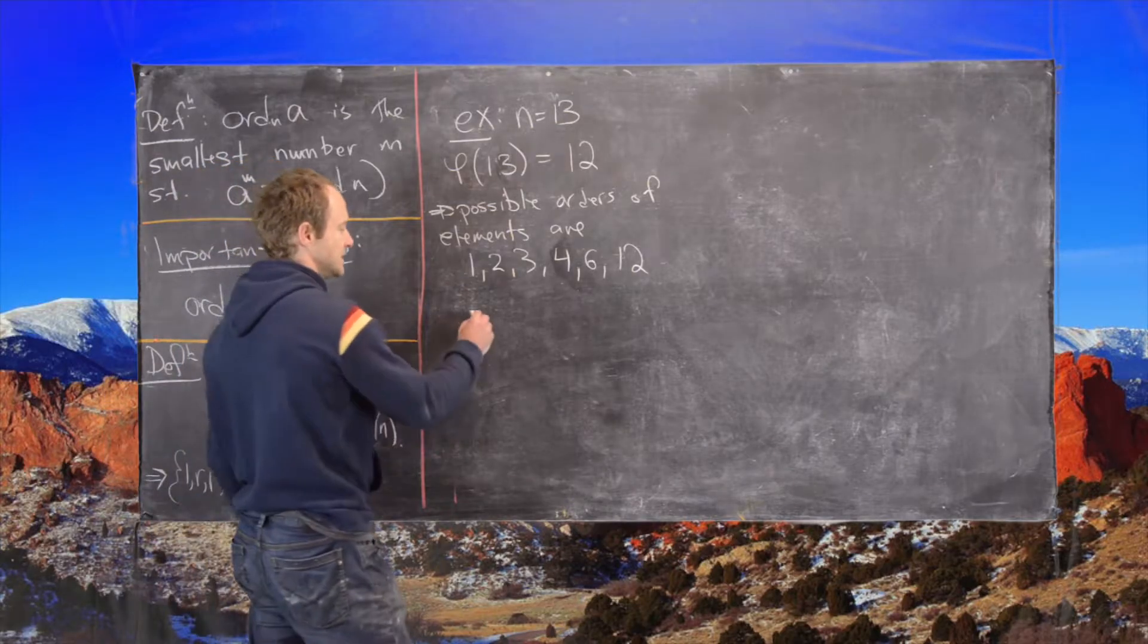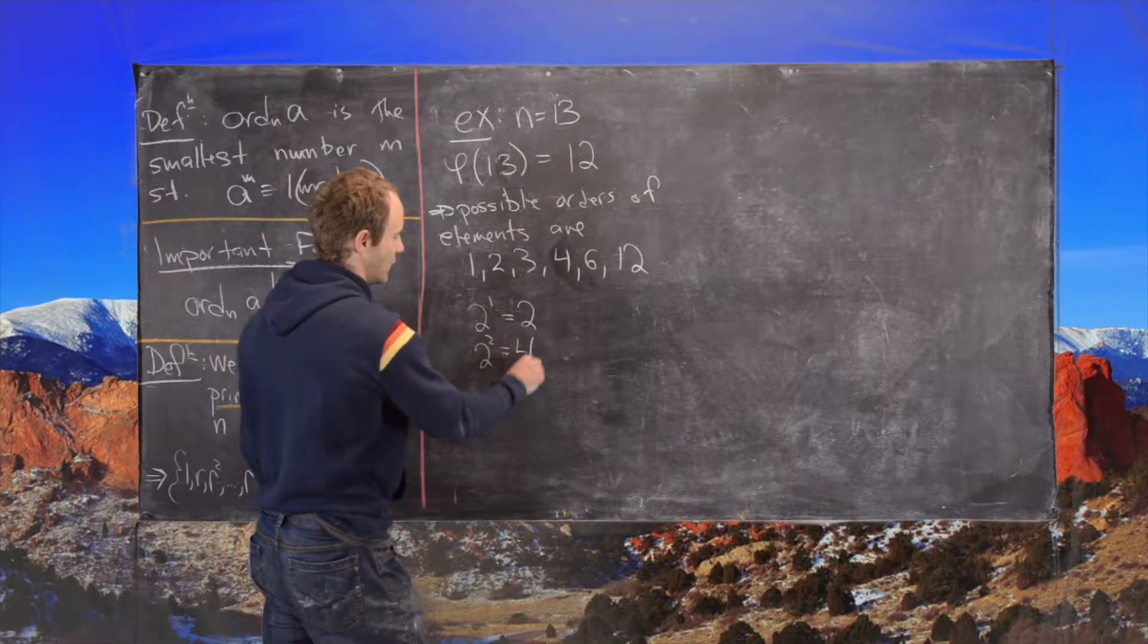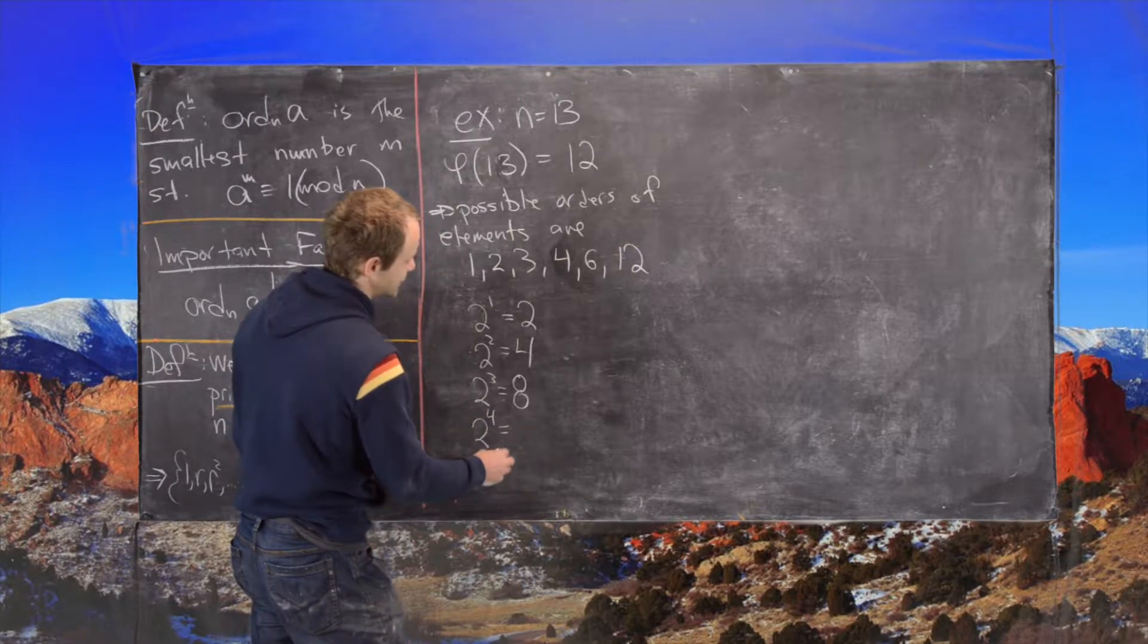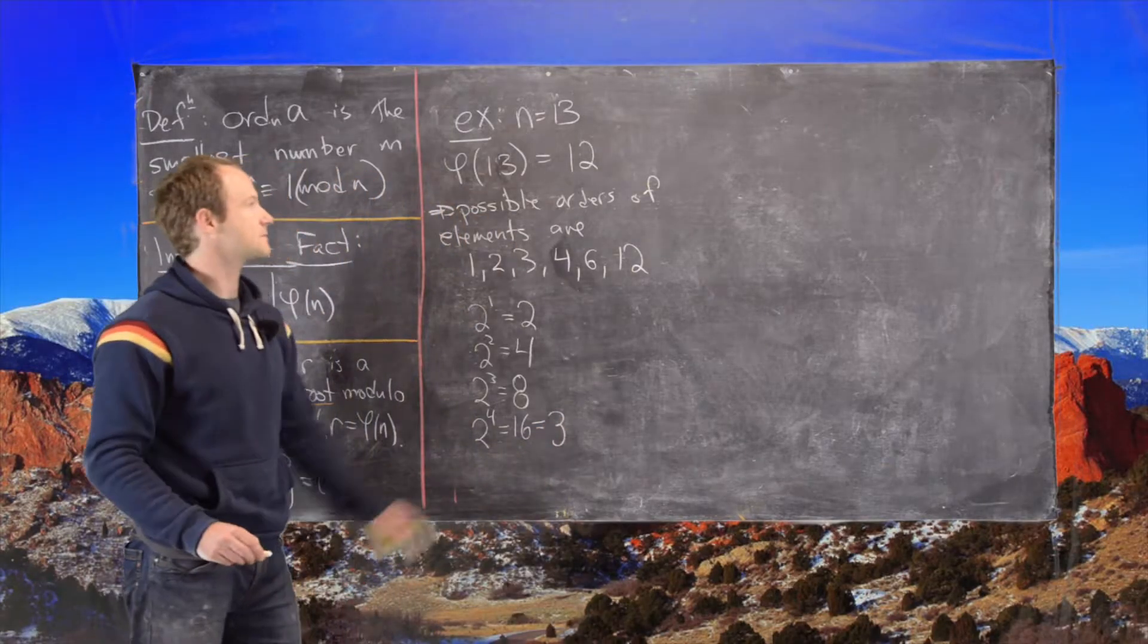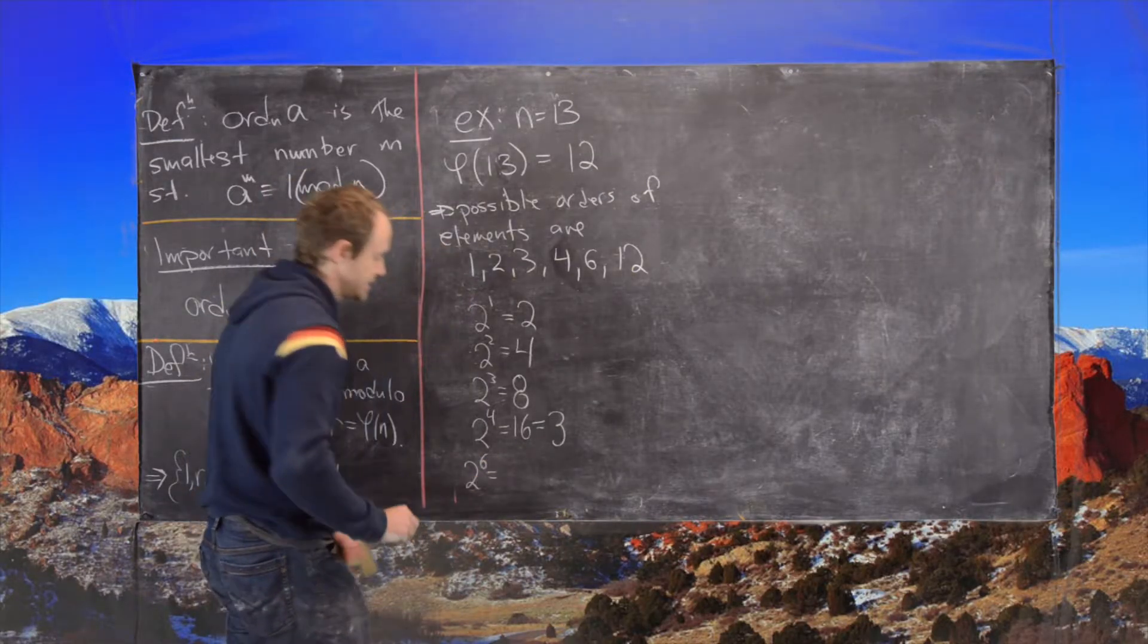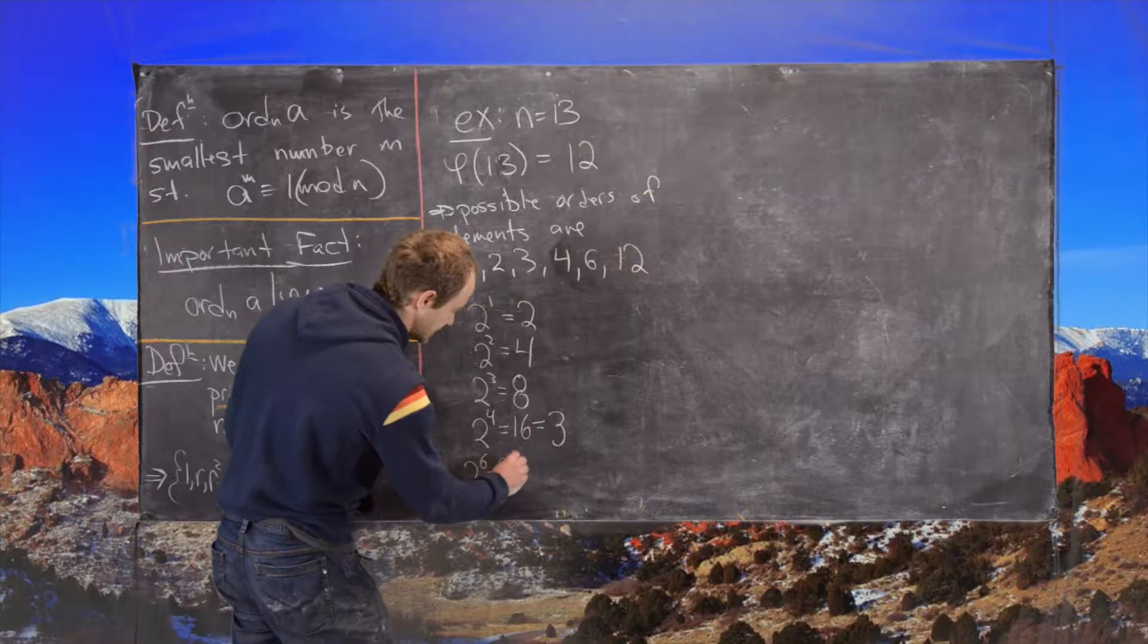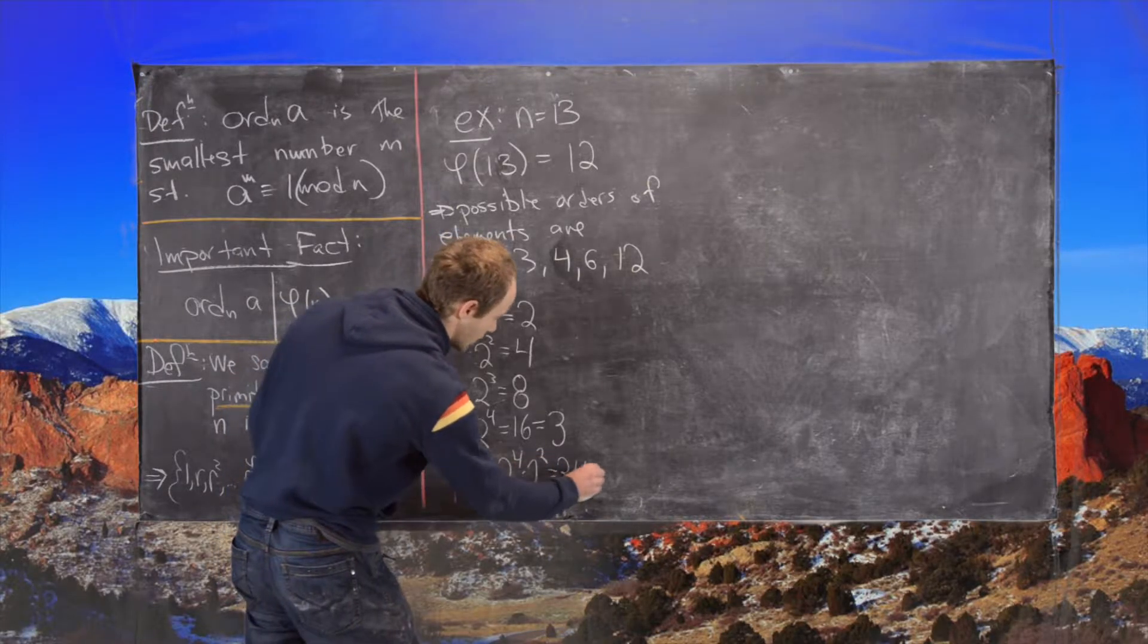So 2 to the 1 is equal to 2. 2 squared is equal to 4. 2 cubed is equal to 8. 2 to the 4th is equal to 16 which is equal to 3 because we're working mod 13. Now 2 to the 6th, so now I'll use what's in the back of my list to help me here. So 2 to the 6th is 2 to the 4th times 2 squared which is 3 times 4 which is 12 which is negative 1.